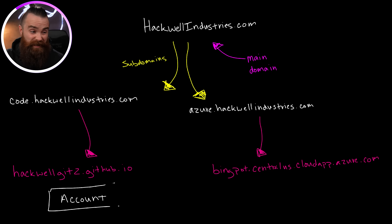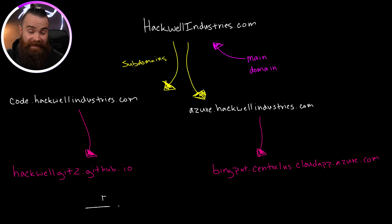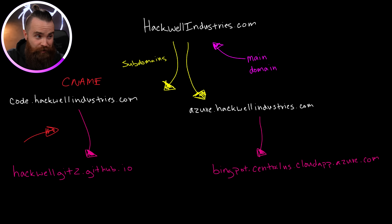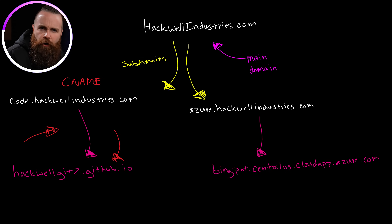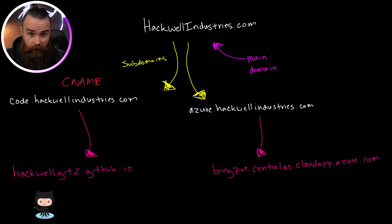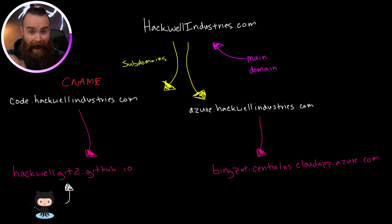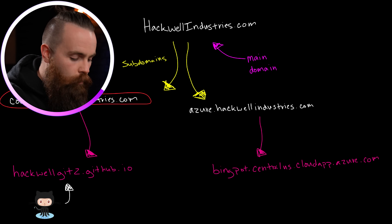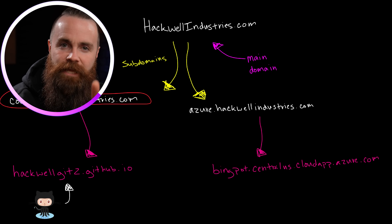Here's the hack. Bernard Hackwell deleted the GitHub account that this DNS entry was pointing to, but do you see what's still there? This DNS entry. This is a CNAME entry pointing to this URL. And even though Bernard deleted the GitHub account, the DNS entry is still there. Because now a hacker can come in and create a new GitHub account. Guess what name I can take - because it was deleted - hackwellget2.github.io. I create a new account with that name, and suddenly code.hackwellindustries.com is pointing to a GitHub that I own, which means I can make it do or say whatever I want.